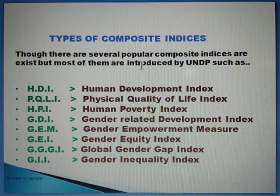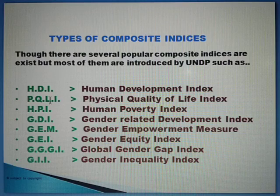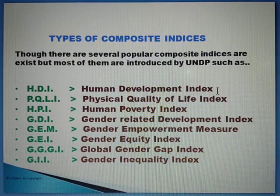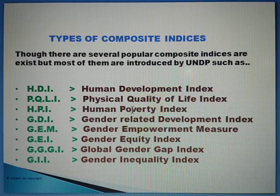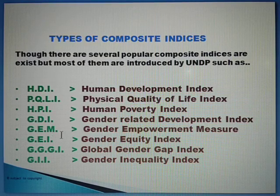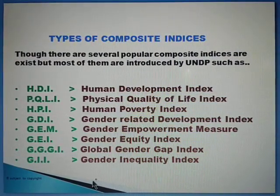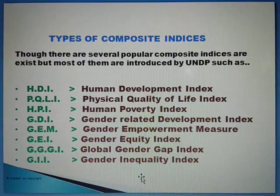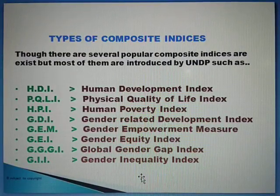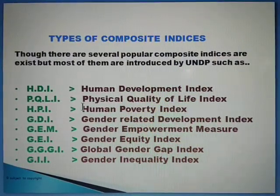There are several popular composite indices, most of which are introduced by UNDP, such as HDI (Human Development Index), PQLI (Physical Quality of Life Index), HPI (Human Poverty Index), GDI (Gender-related Development Index), GEM, GEI, GGGI, and GII (Gender Inequality Index). Except these indices, there are many other composite indices used to compile data. It is very difficult to discuss all these indices in a single video.